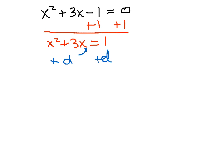So once you move this 1 over to the other side, we just need to make sure that the number in front of x squared is 1. If it was a 4 in front of the x squared, we'd want to divide both sides by 4. If it was a 2, we'd divide both sides by 2. But since we have a 1, we can right now just solve for d.